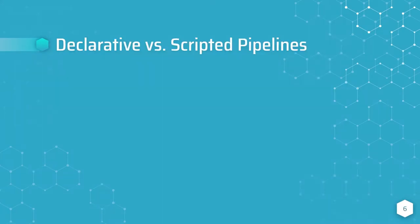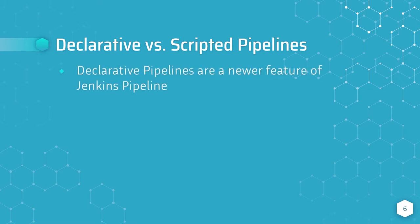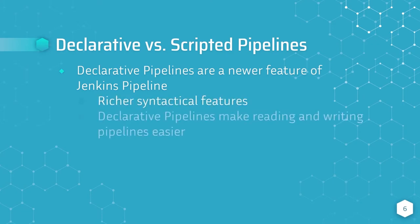It's also worth mentioning the two types of Jenkins pipelines: declarative and scripted pipelines. Declarative pipelines are a newer feature of Jenkins pipeline, and they have richer syntactical features than scripted pipelines, which makes them easier to read and write.